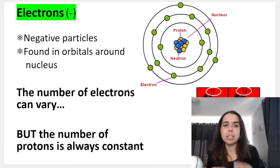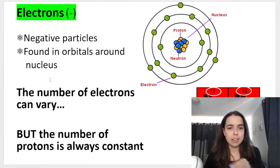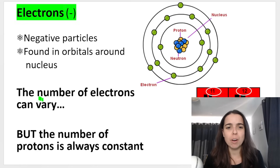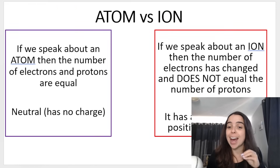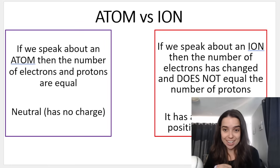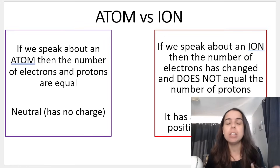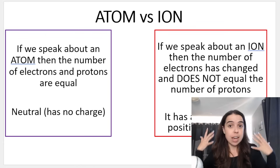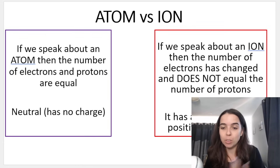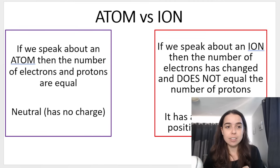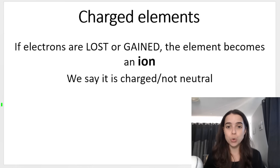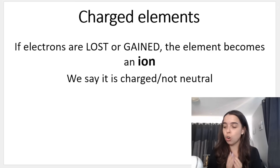Let's get into more detail about what it means that the number of electrons can vary. This is the case when we speak about an atom versus an ion. A substance will form an ion if it gains or loses electrons — it is charged and no longer neutral.